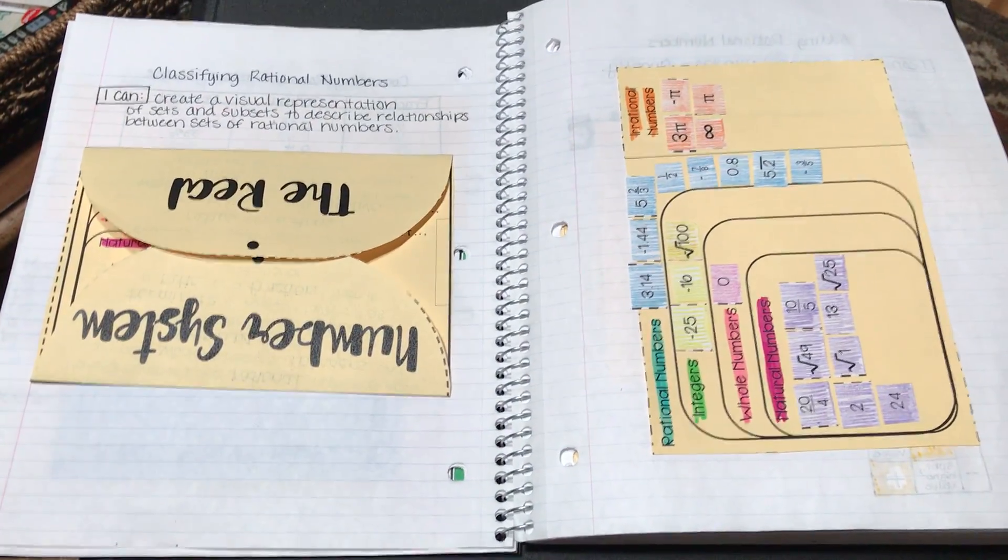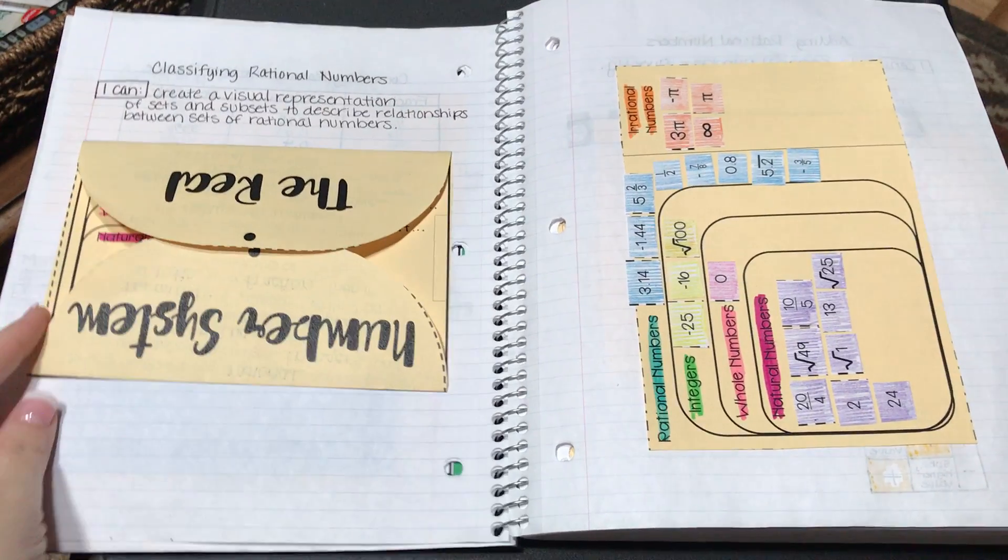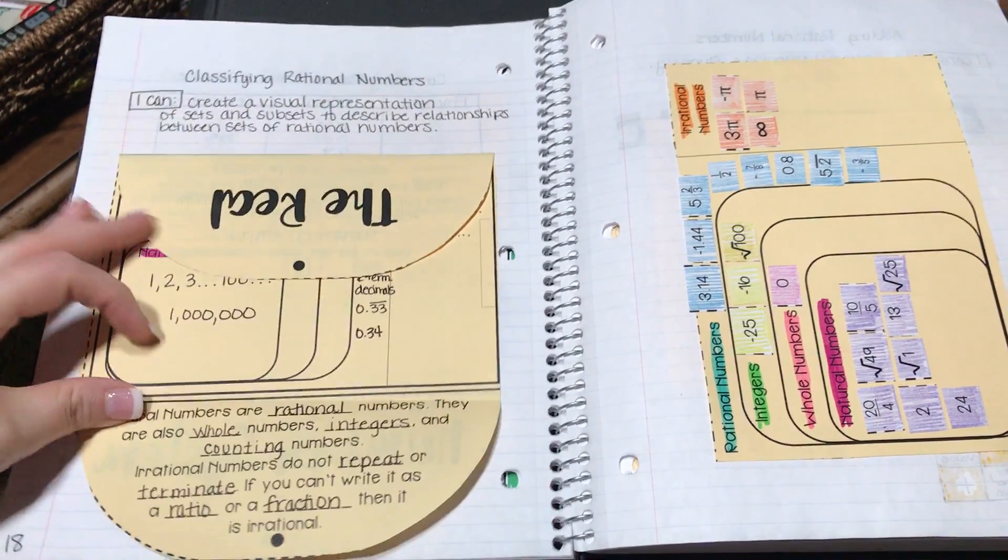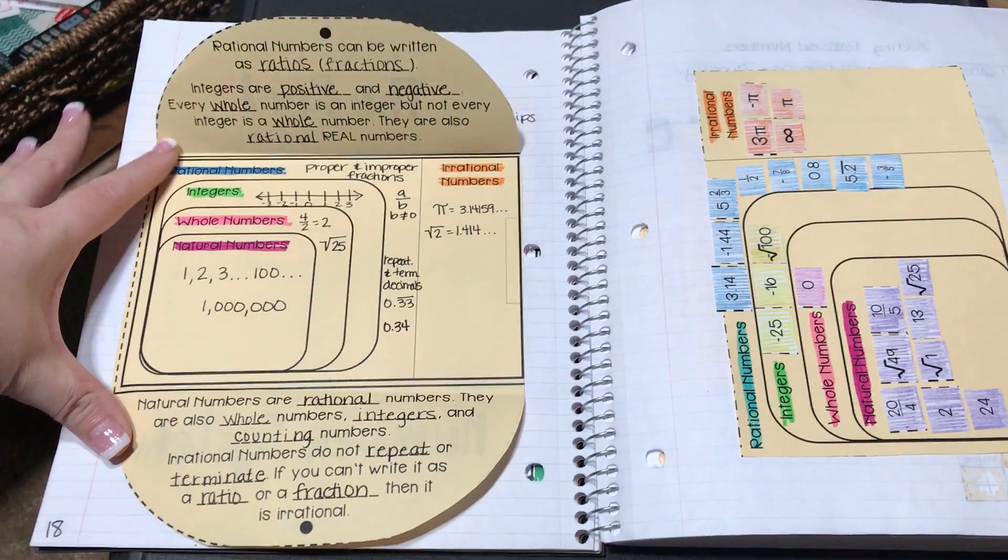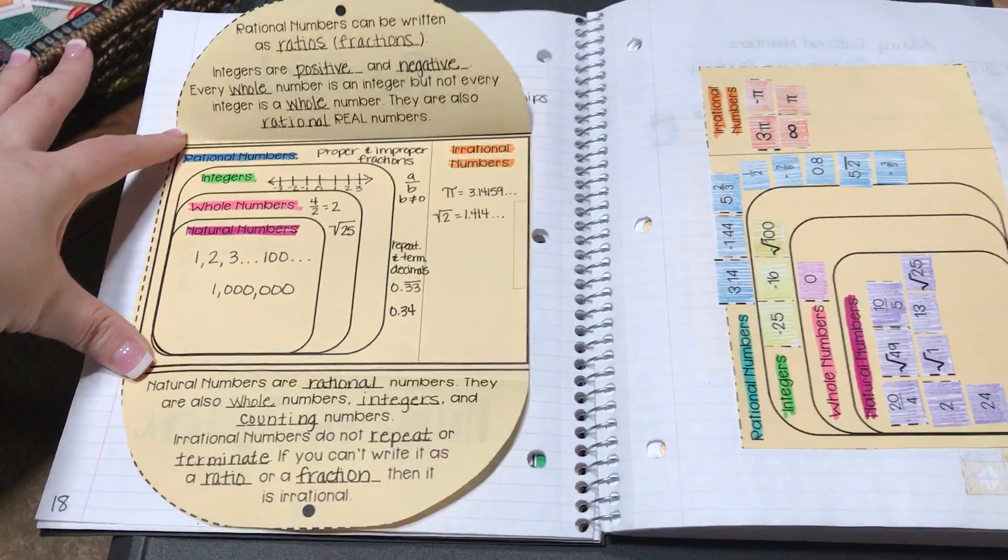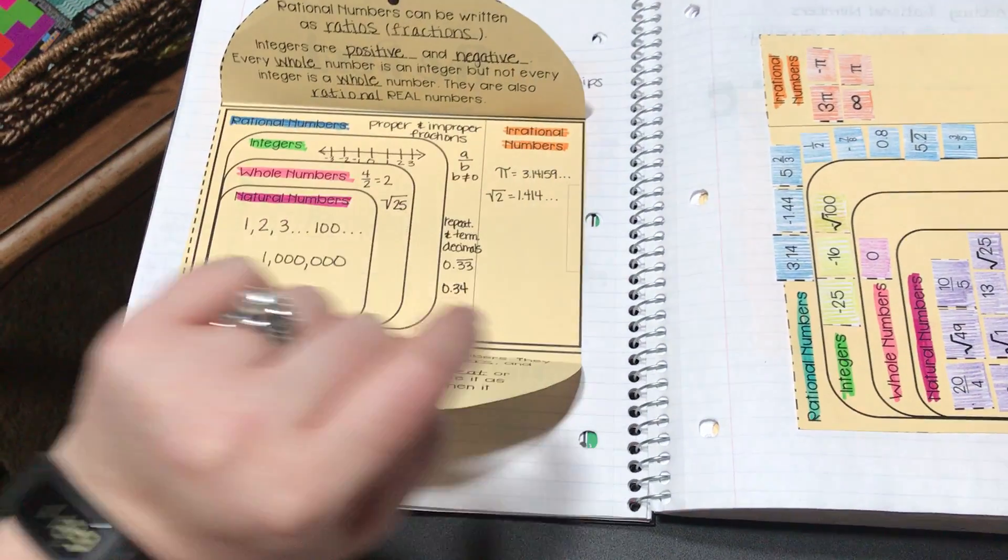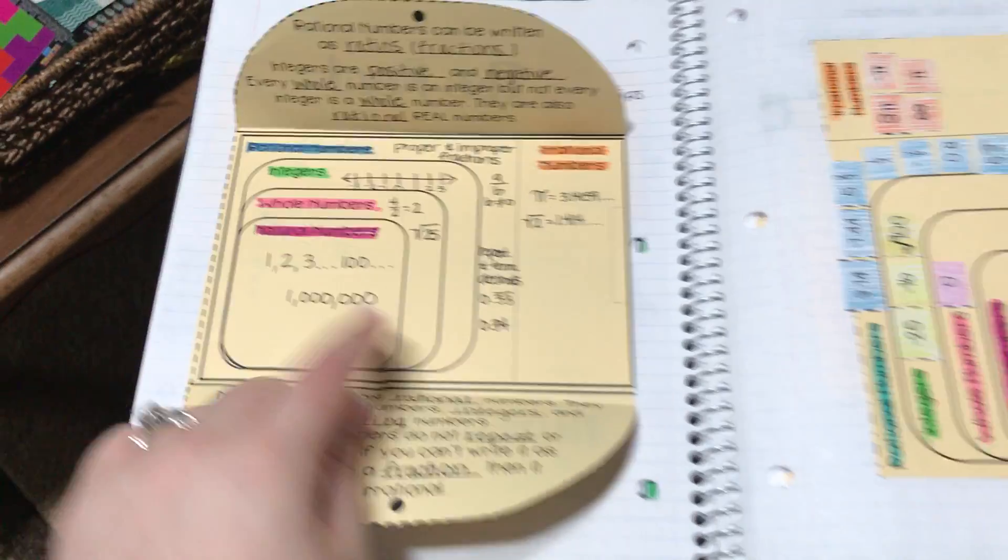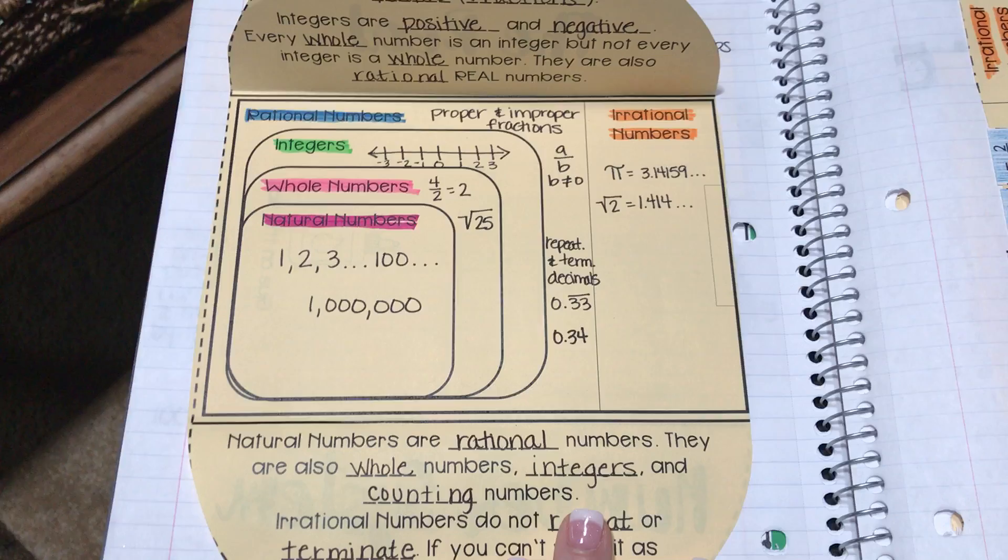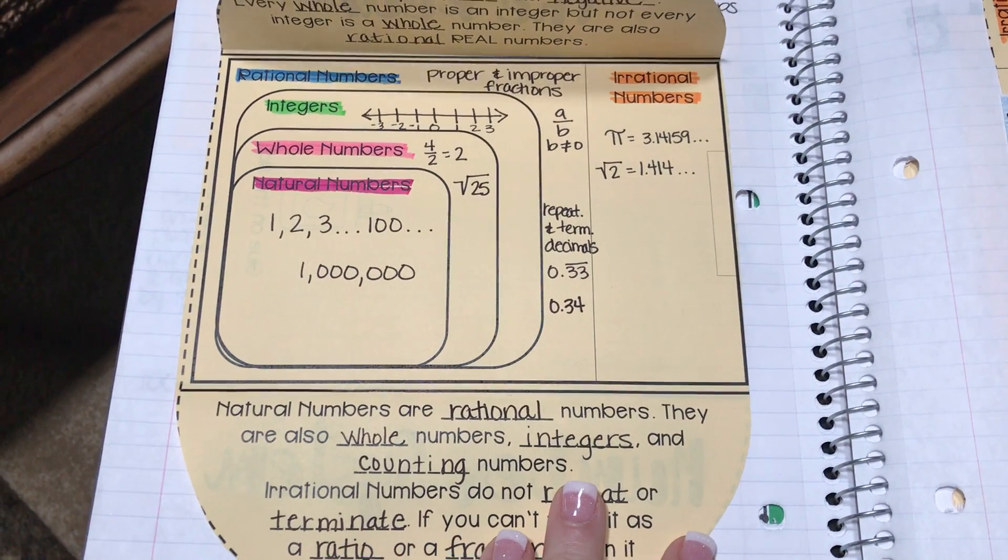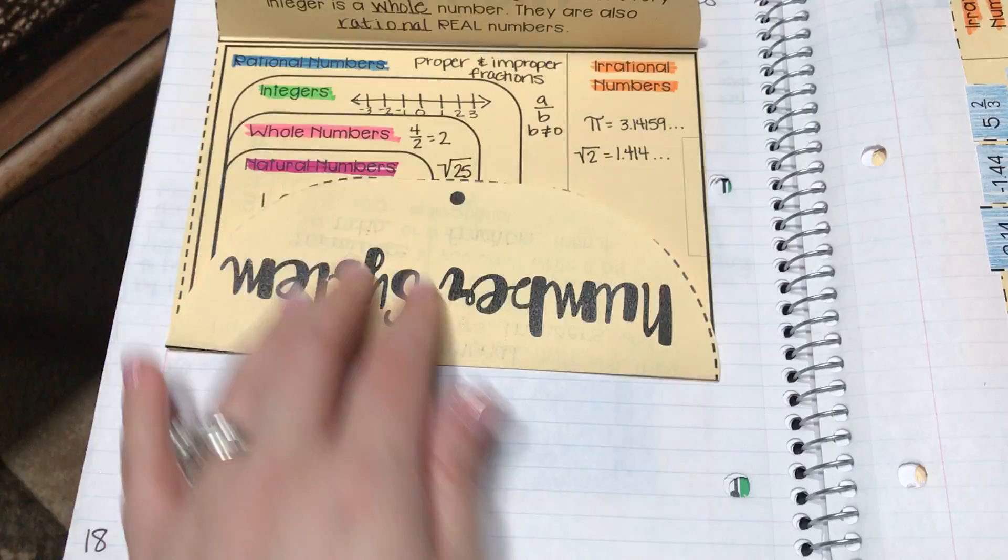The next lesson is classifying rational numbers on the real number system. You can see here this full court shutter flippable opens up to contain all the notes for this lesson as well as a chart that the students have color coded to the different types of numbers. The reason for that will show up on the output, but within each part they have examples that go with the different types of sets and subsets.